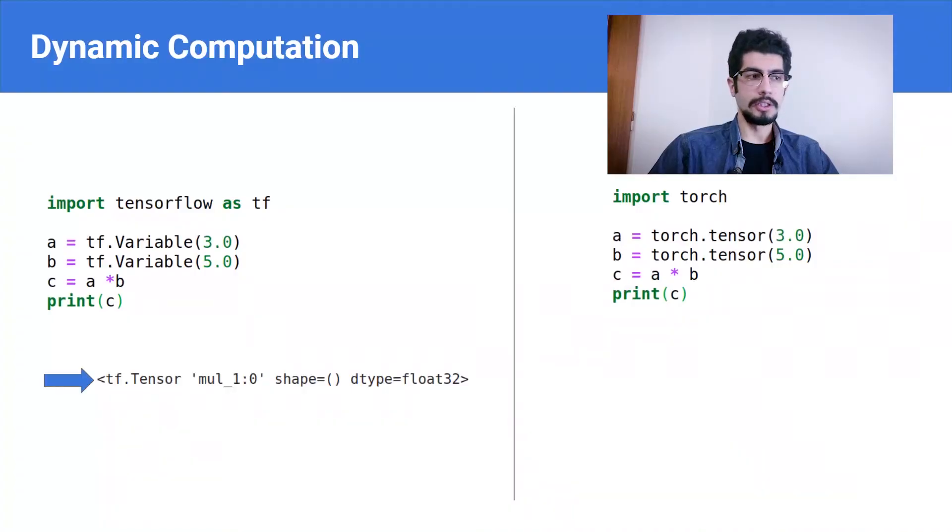With PyTorch, the computational graph is built dynamically. When you specify the relation between input and output, it starts to save tensor values and derivative rules with respect to a specific node — but you have to set requires_grad to True. Here is the code in PyTorch. When you run it, you simply see the result is 50.